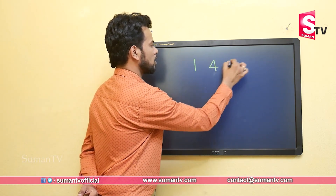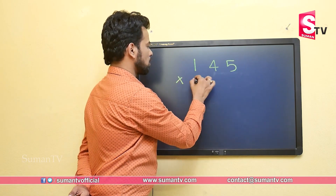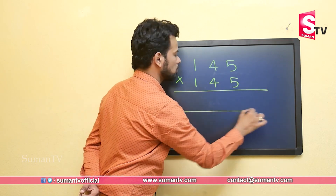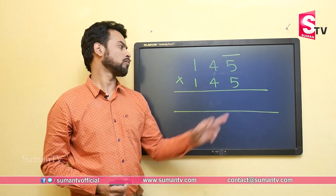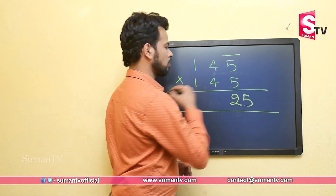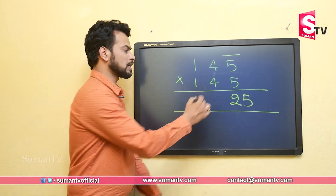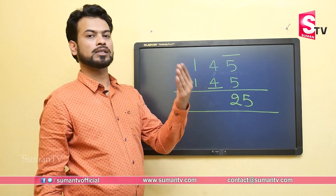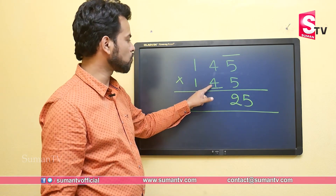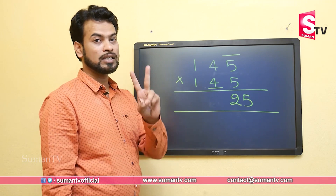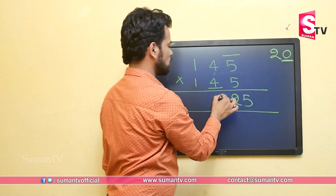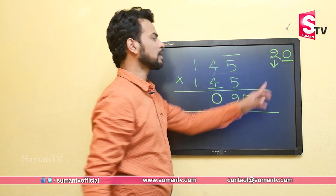Let's do one more example: 145 multiplied by 145. First step: multiply unit with unit — 5 into 5 is 25. Second step: the tens digit is 4 and its successor is 5, so we multiply 4 with 5, which gives 20. Since we get a double digit answer, we place only the unit digit 0 here and take 2 as a carryover.